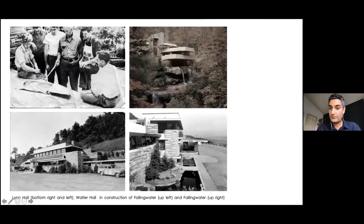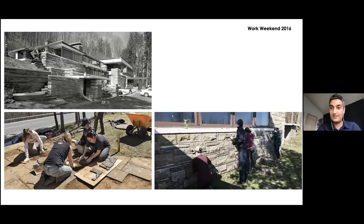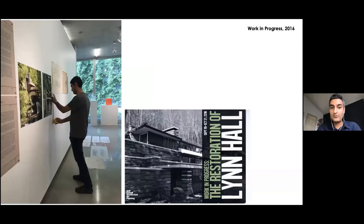Raymond was the son of Walter Hall. Walter Hall was the main contractor for Frank Lloyd Wright's Fallingwater. The building at the bottom is a building that Raymond designed and Walter built — it's called Lane Hall. You may know this building from Work Weekend 2016, or from the exhibition organized as part of the HPP 40th anniversary at Cornell Work in Progress.